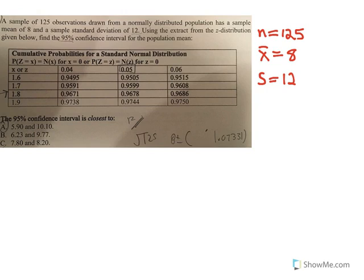But they say using the extract from the z distribution given below, find the 95% confidence interval for the population mean. Okay, so first of all, this data is from a normally distributed population, so we can assume that the sample is normally distributed, which, again, normally you would use t values, but because we have a large enough sample and we're from a normally distributed population, we're just going to jump to using the z values. They actually tell us to do that too.